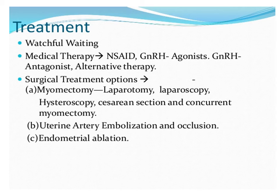For treatment: if the patient is not symptomatic, we must adopt watchful waiting. Only when symptoms develop should we treat. Medical therapy options include NSAIDs and GnRH analogs — both agonists and antagonists — which are usually given to reduce the size of the fibroids and reduce heavy menstrual bleeding associated with fibroids.